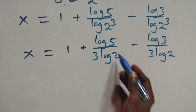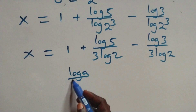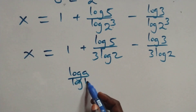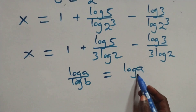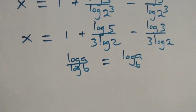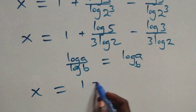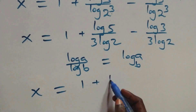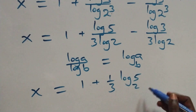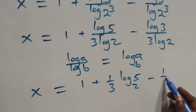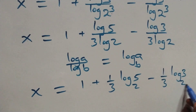Then when we apply the change of base here — from what we have, log a over log b is the same thing as log a to base b — what we have here becomes x equals to 1 plus one-third log 5 base 2, then minus one-third log 3 base 2.